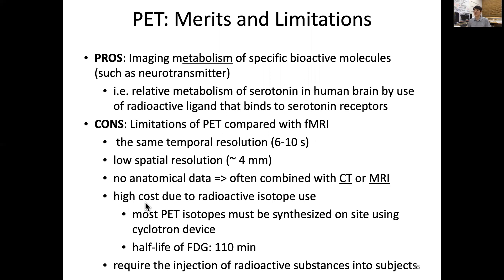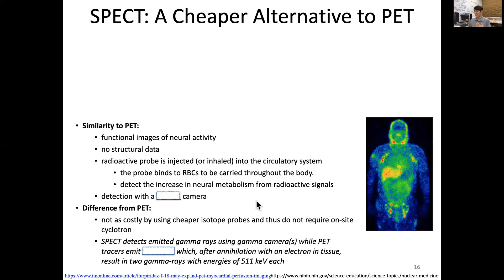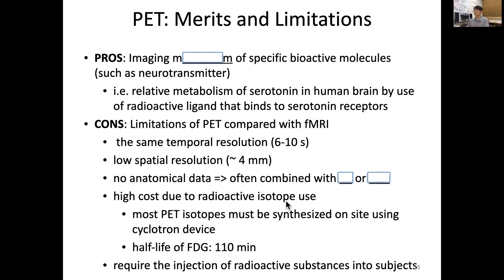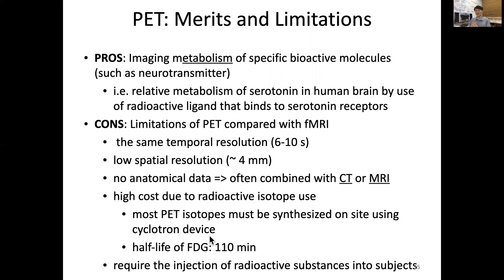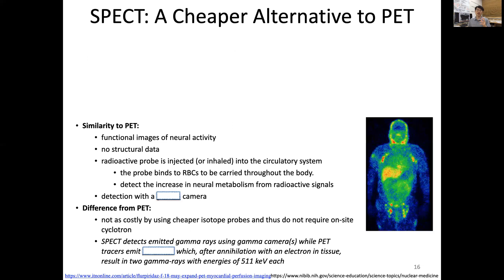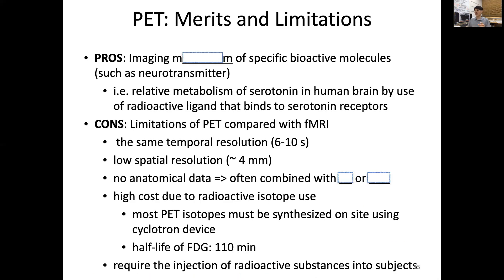PET has a pretty high cost due to the use of radioactive isotopes. Most PET isotopes must be synthesized on-site using a cyclotron device, which is big, expensive equipment. The reason is that these are short-lived isotopes, so the half-life is usually very short.